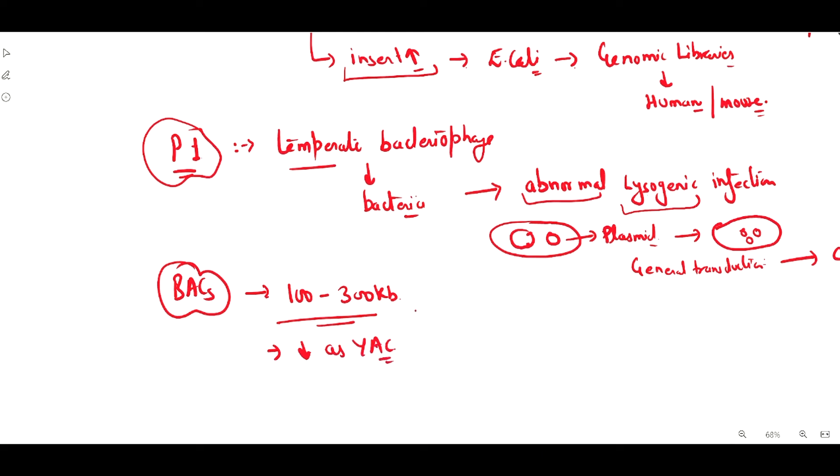Another important thing about P1 derived artificial chromosome is that it can be easily manipulated. It can be cultured easily in the host cells, transformed into the host cells, where we can make our proper libraries.